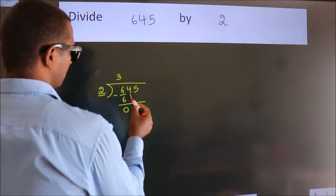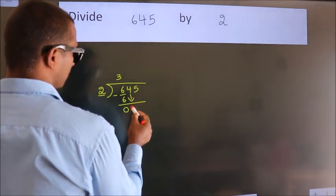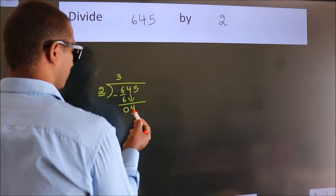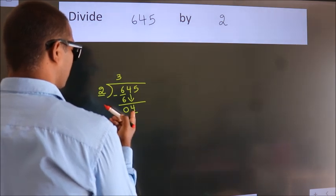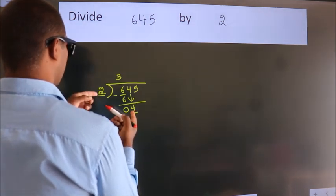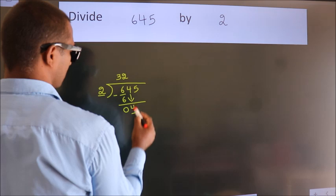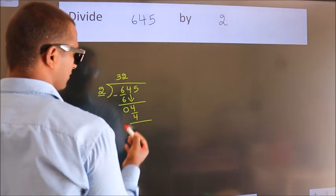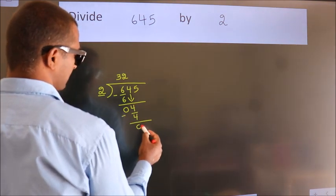After this, bring down the beside number. So, 4 down. When do we get 4? In 2 table, 2 twos, 4. Now, we subtract. We get 0.